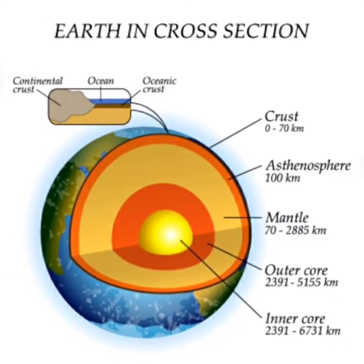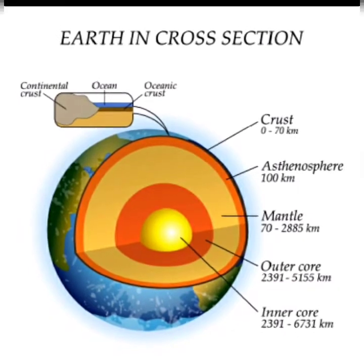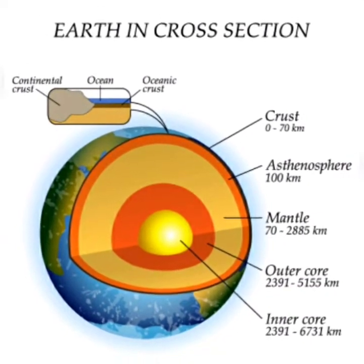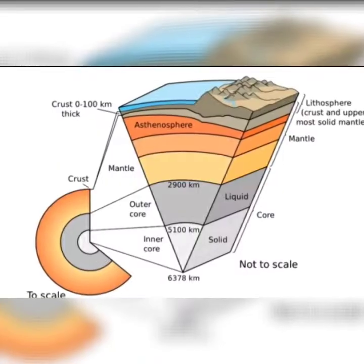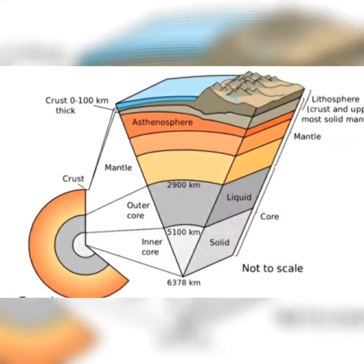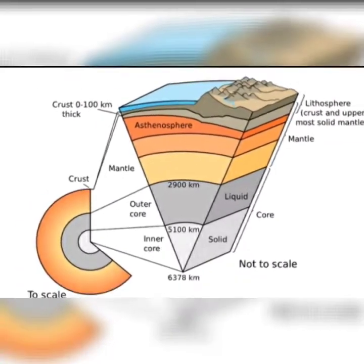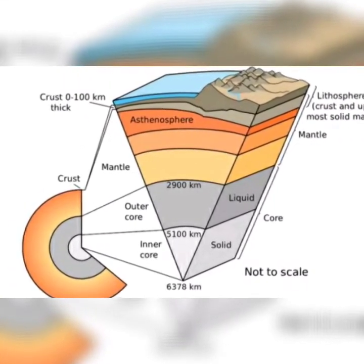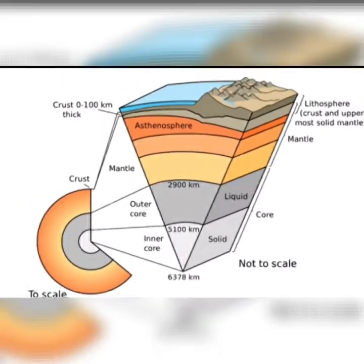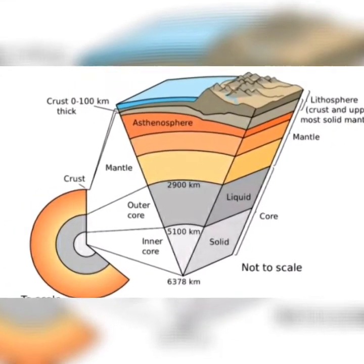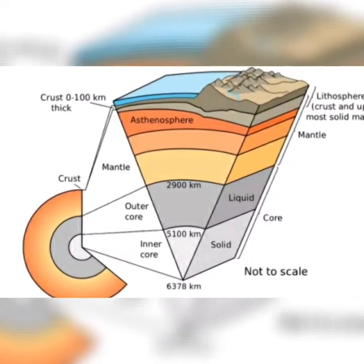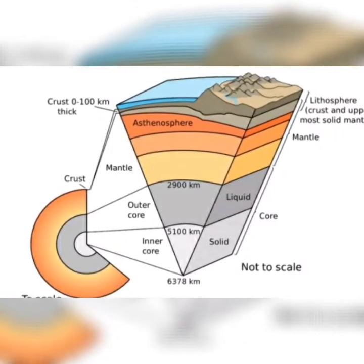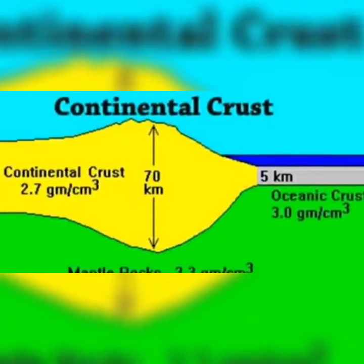Let's talk a little bit about the crust. The crust is the thinnest layer and it is that layer on which we live. We have the continental crust and we have the oceanic crust.